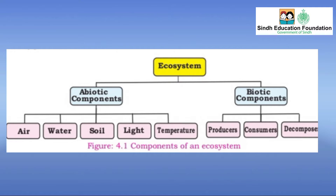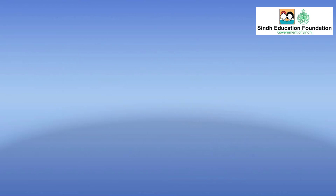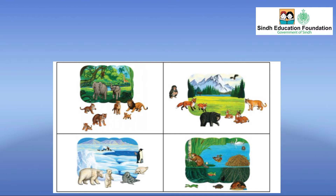These freshwater, terrestrial or ocean ecosystems could be as large as the desert or forest, and they could be as small as a pond or school garden. All those components that interact in an ecosystem are called factors.